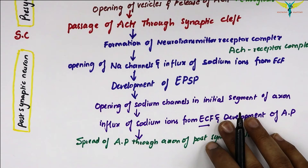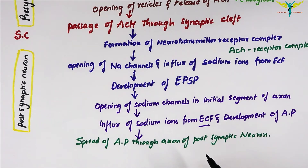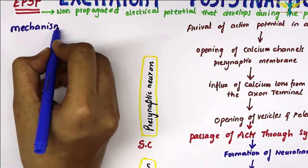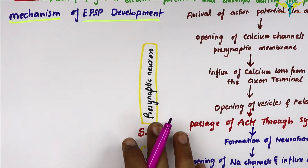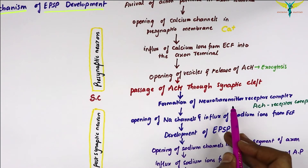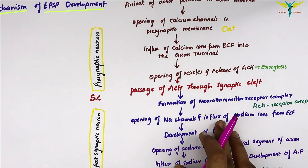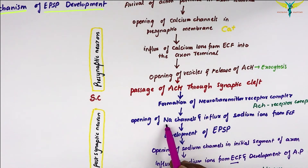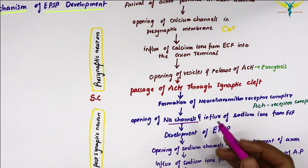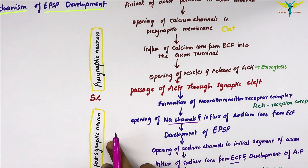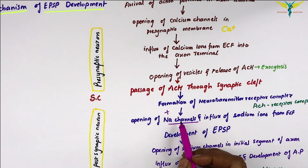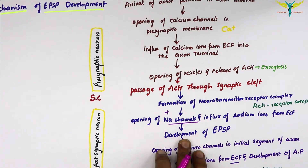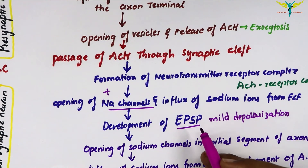Now let's learn about the mechanism of development of the EPSP. As already seen in the flow chart, the mechanism of EPSP development is due to the formation of the neurotransmitter-receptor complex, which causes the opening of the ligand-gated sodium channels, allowing sodium ions to enter from the ECF into the cell body of the post-synaptic neuron. As sodium ions are positively charged, the resting membrane potential inside the cell body is altered — this mild depolarization is called the EPSP, and this EPSP is a local potential.